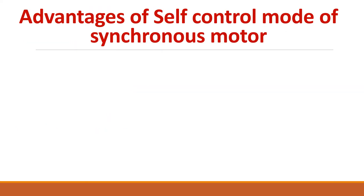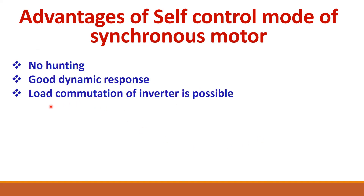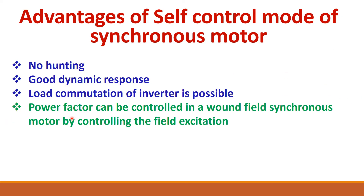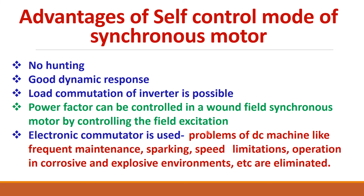The advantages of self-control mode are: there is no hunting, good dynamic response, and load commutation is possible — meaning no need for forced commutation circuits. Power factor can be varied by controlling field excitation. The motor is also called an electronic commutator. Unlike DC machines, which cannot be used in explosive environments due to sparking at the commutator, the electronic commutator avoids this problem.